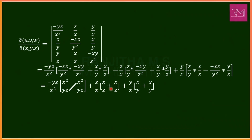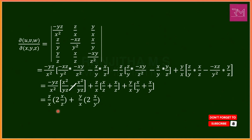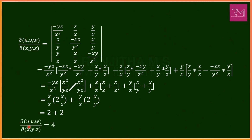The remaining terms yield z/x · (2x/z) + y/x · (2x/y) = 2 + 2 = 4. Hence del(u,v,w)/del(x,y,z) = 4. This completes the problem.